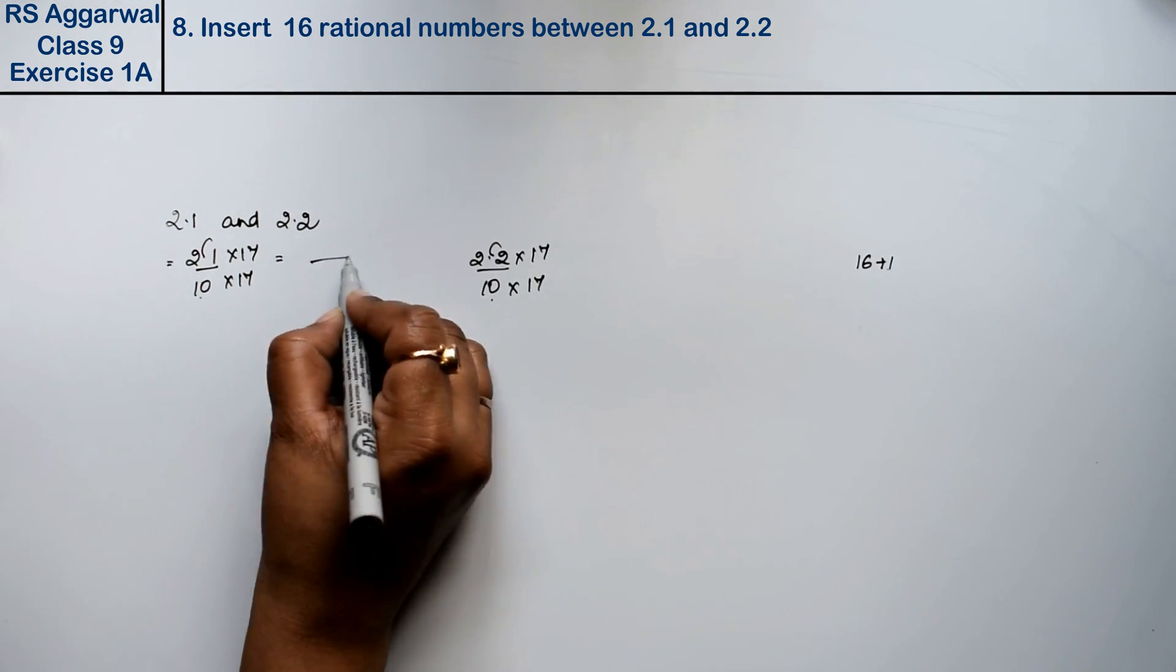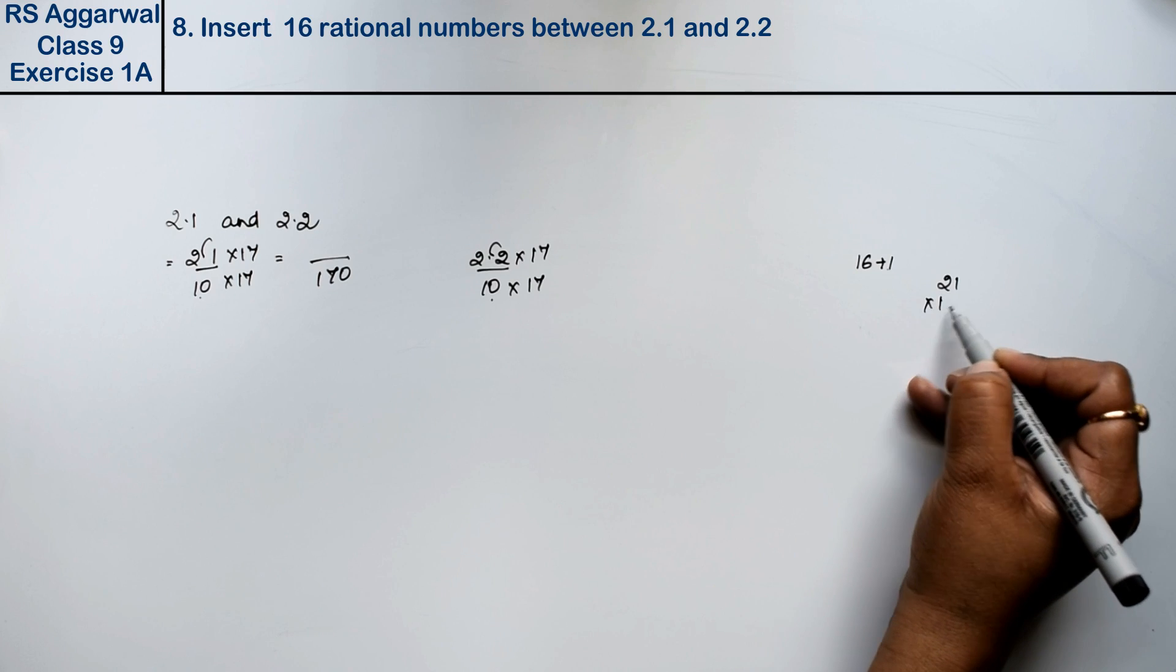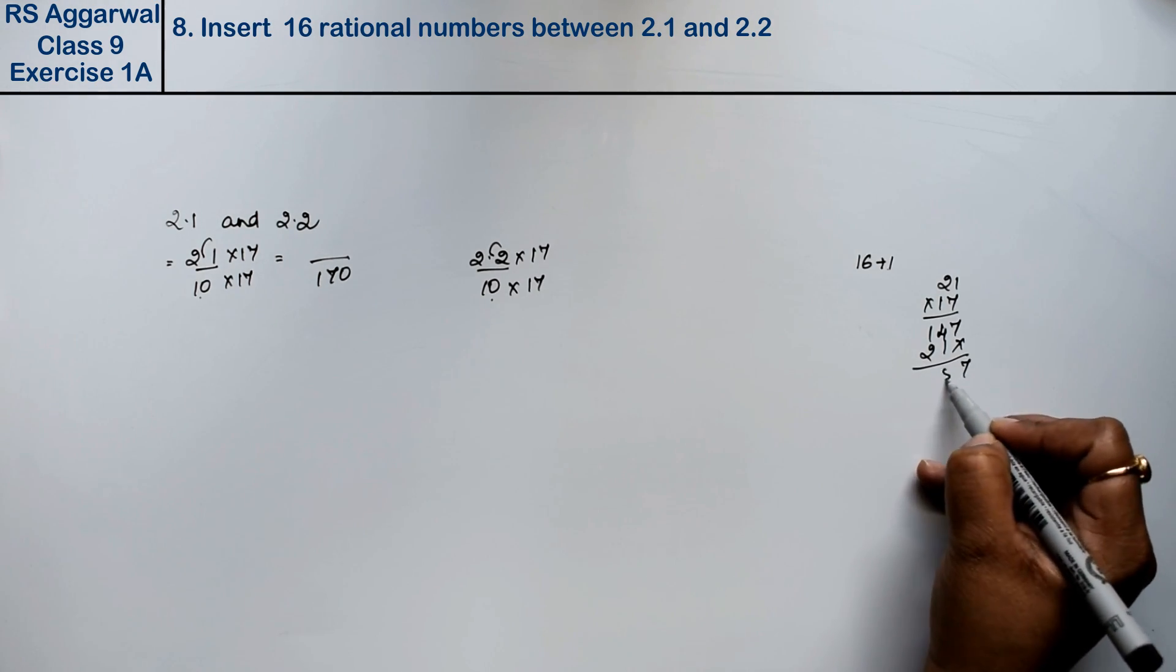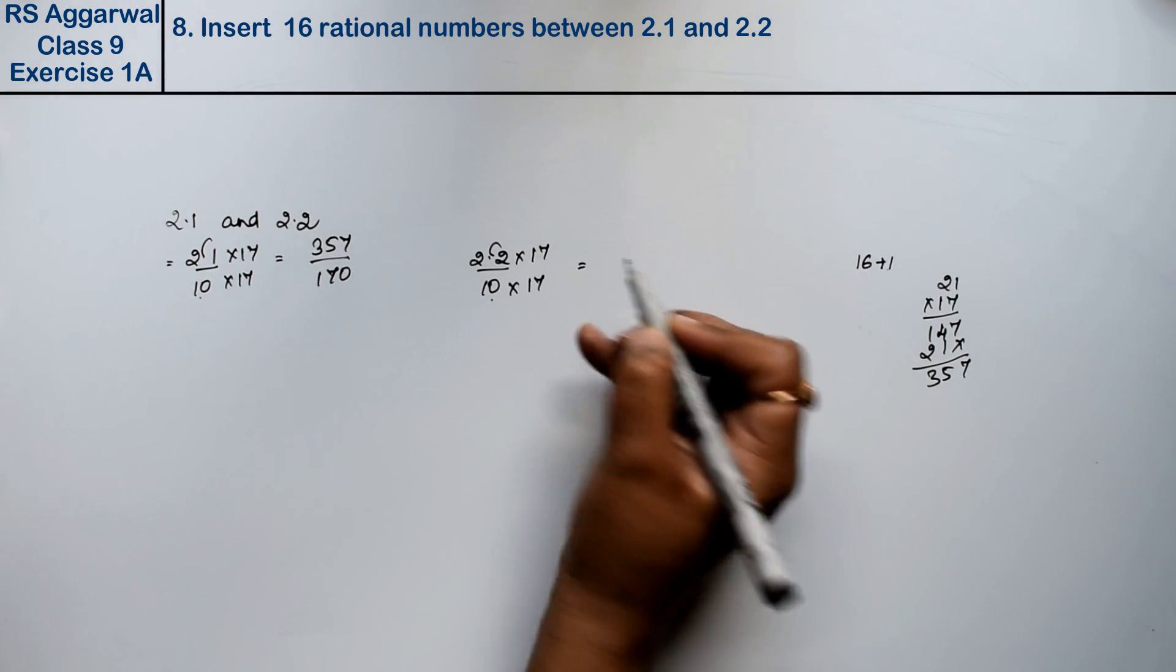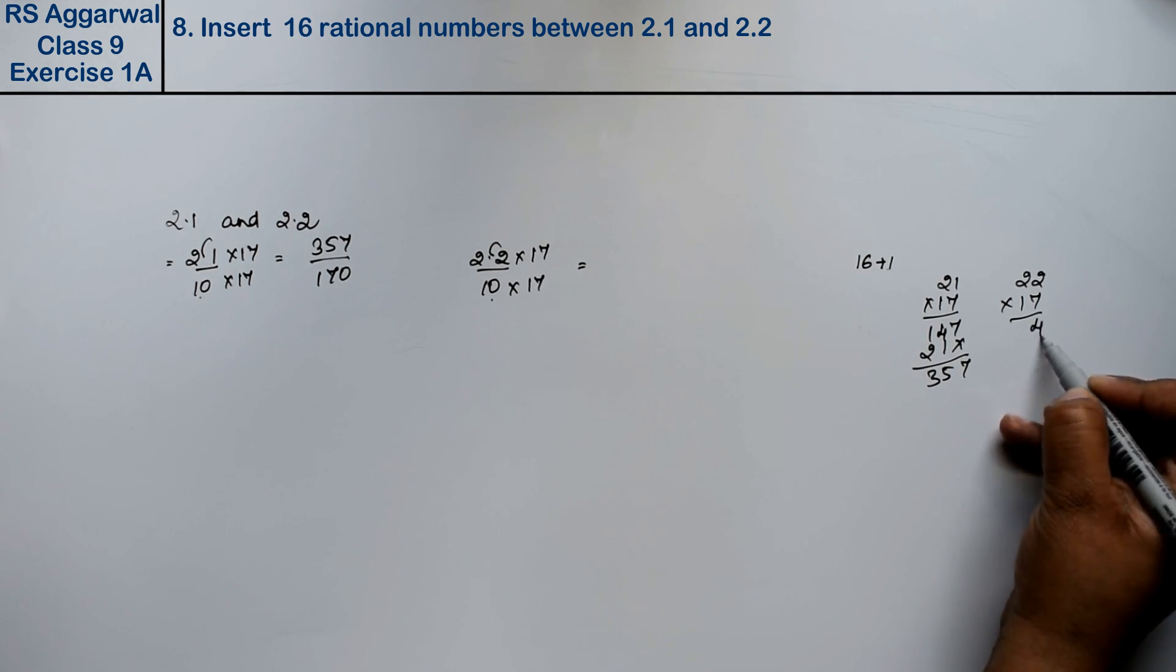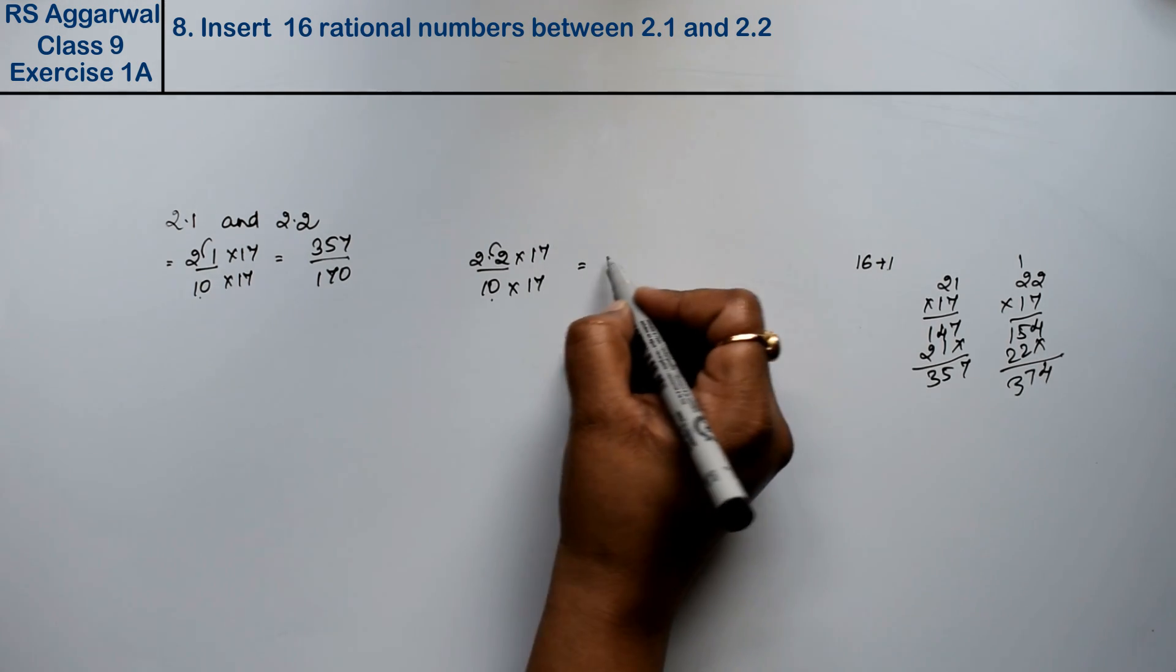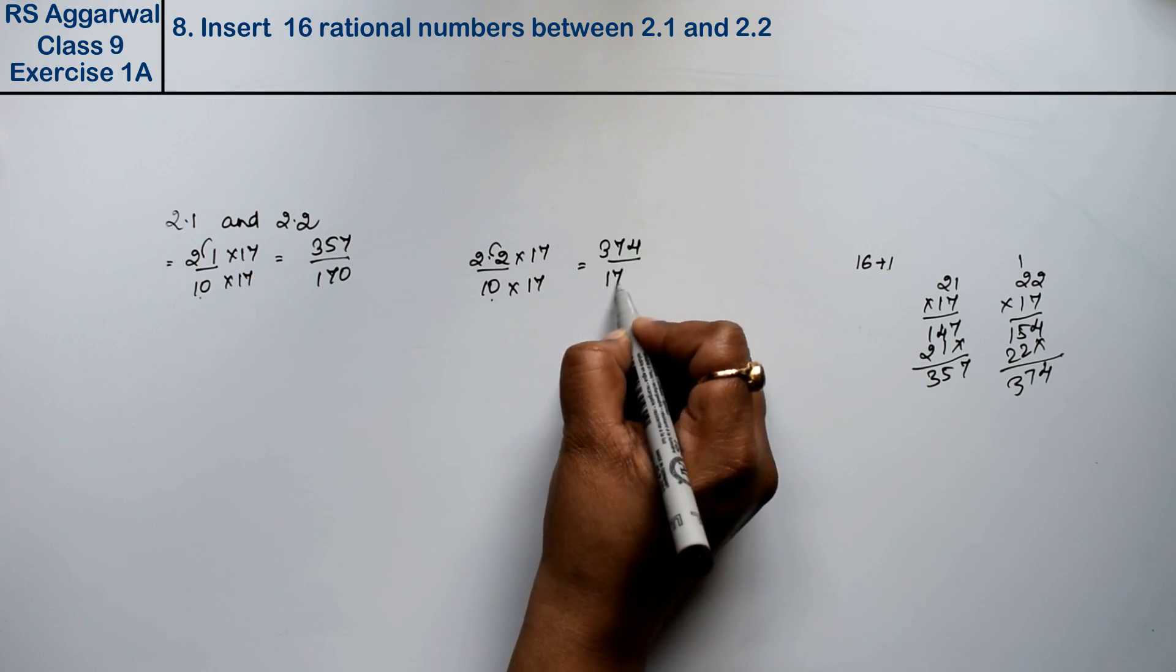Now, there is 170 in the denominator. 21 into 17, how much is it? 7 times 1 is 7, 7 times 2 is 14, add 1 makes 15, so it is 357 divided by 170. And how much is 22 into 17? 7 times 2 is 14, 7 times 2 is 14 plus 1 equals 15, so it is 374 divided by 170.